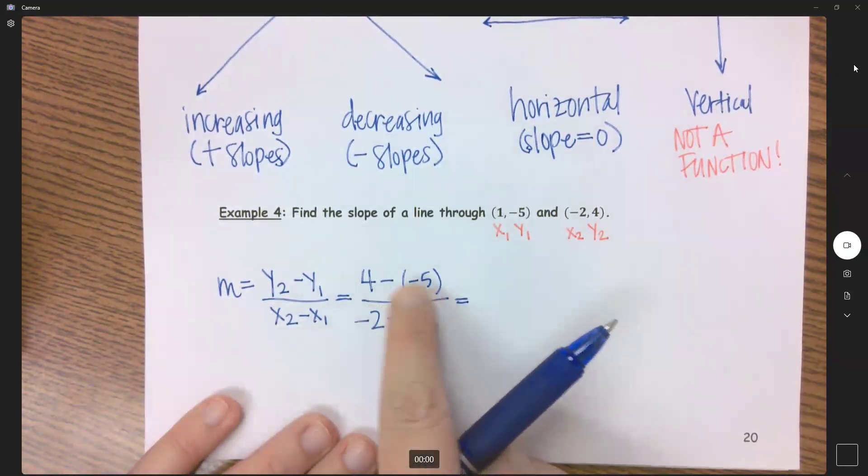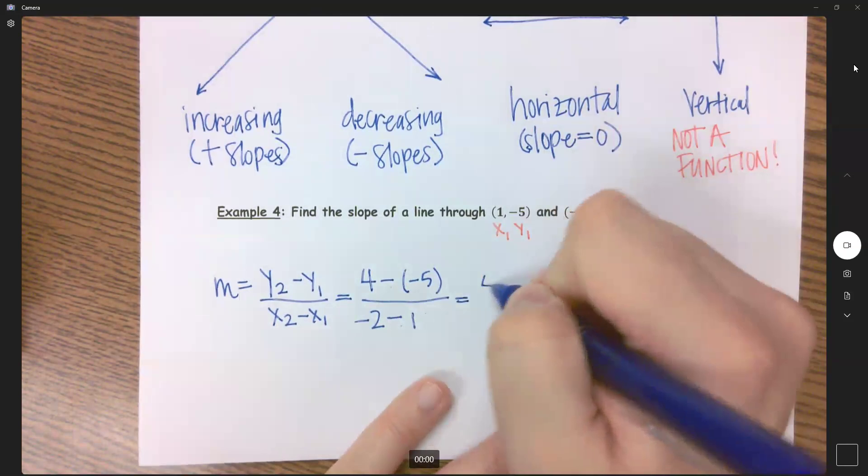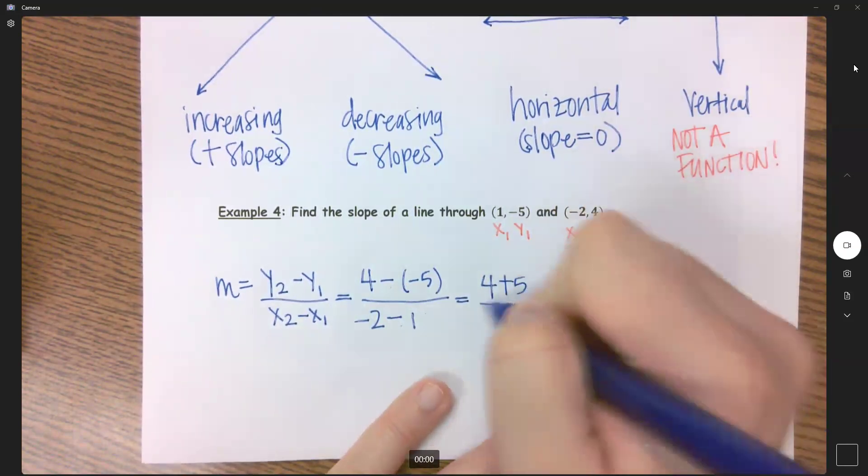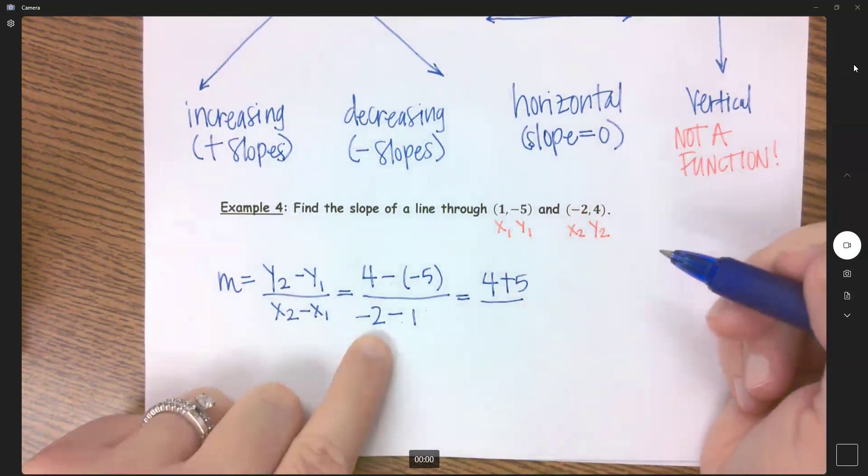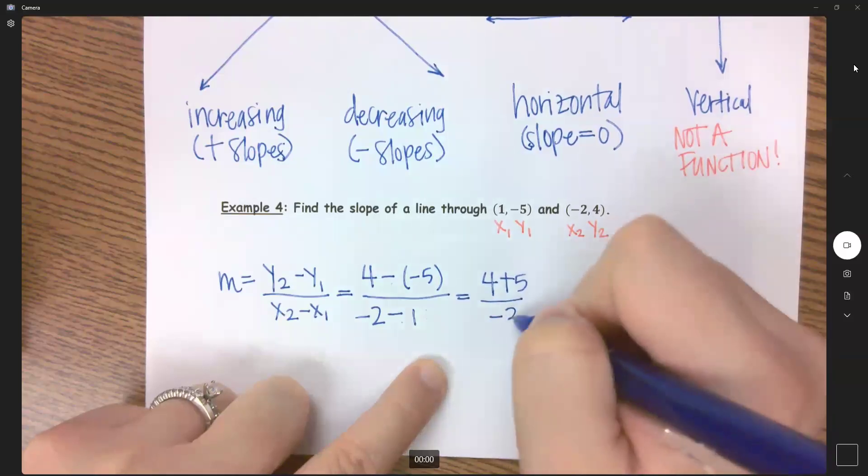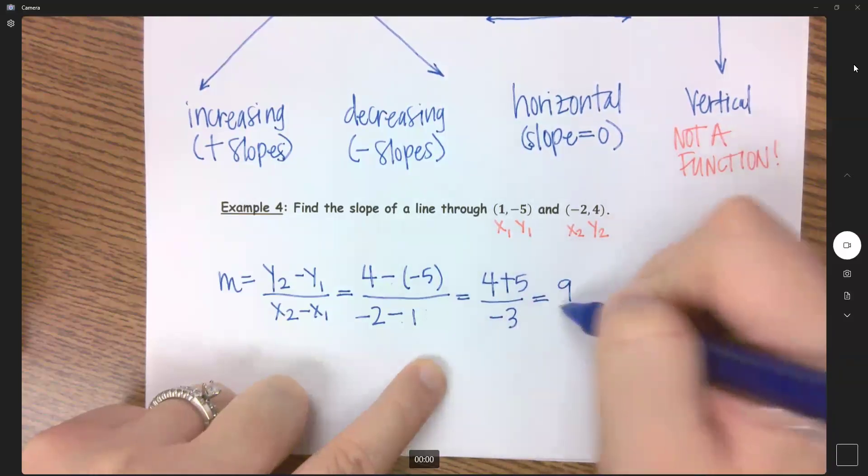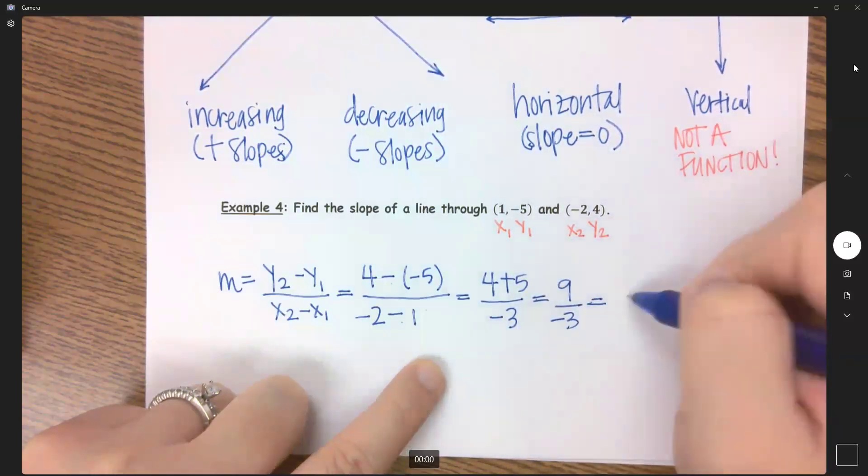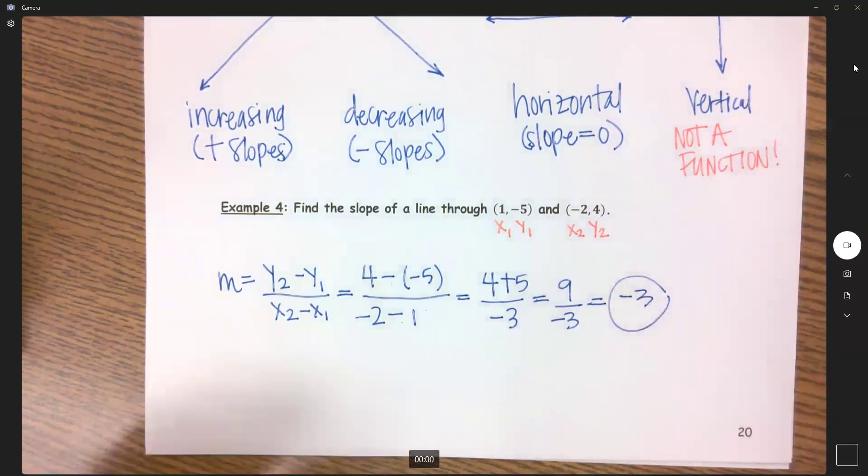Okay, so I'm going to clean this up a little bit. 4 minus a negative 5, minus a negative becomes plus. So this is 4 plus 5. Negative 2 minus 1 is negative 3. So I have 9 over negative 3. So I have a slope of negative 3.